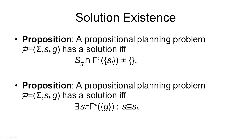To understand the properties that the planning graph represents, I want to remind you of a proposition we have seen earlier, and that was about solution existence to planning problems. So if we are given a planning problem consisting of a state transition system, an initial state, and a goal, we can say that this planning problem has a solution if and only if the following condition holds: the set of all possible goal states intersected with this set here must not be empty.